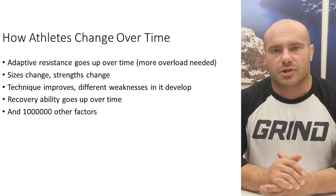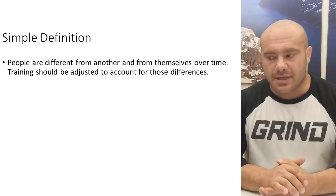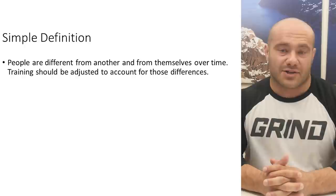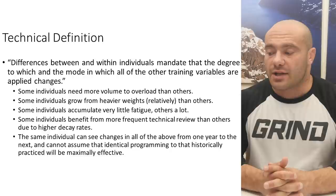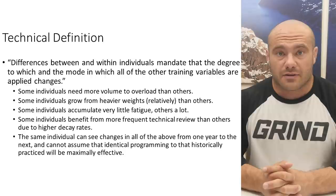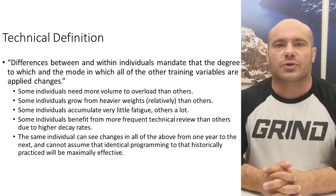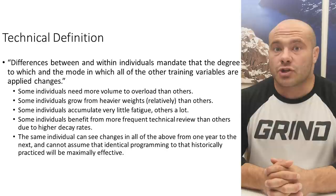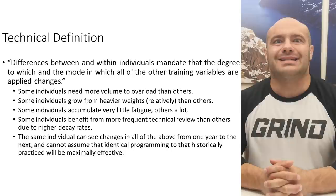The simple definition of individualization as a training principle is: people are different from one another and from themselves over time. Training should be adjusted to account for these differences — training can't continue to be the same for everyone, or even for the same person over time. The technical definition is: differences between and within individuals mandate the degree to which, and the mode in which, all of the other training variables are applied. Notice — we're not saying some training principles don't work. They all work and work in the same way for everyone. But the degree to which we apply them is going to change.